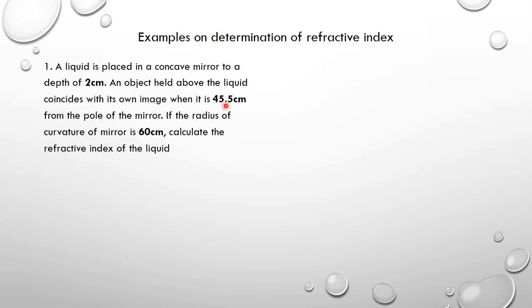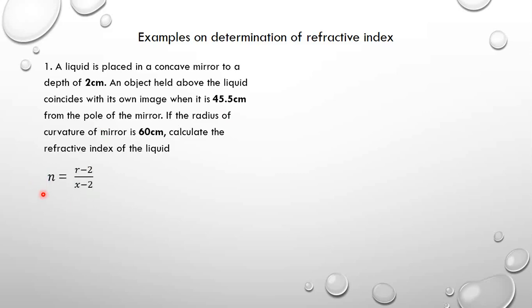A liquid is placed in a concave mirror to a depth of 2 cm. An object held above the liquid coincides with its own image when it is 45.5 cm from the pole of the mirror. If the radius of curvature is 60 cm, calculate the refractive index of the liquid. Using the formula N equals R minus D over X minus D, where R is 60 and X is 45.5, we substitute and get 1.33.